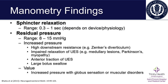Anterior traction of the upper esophageal sphincter, potentially due to diverticulum or cancer, may also cause increased residual pressure, as can large bolus swallows. The value of monitoring residual pressure is that in patients with muscular disorders and globus sensation, we see increased residual pressures.